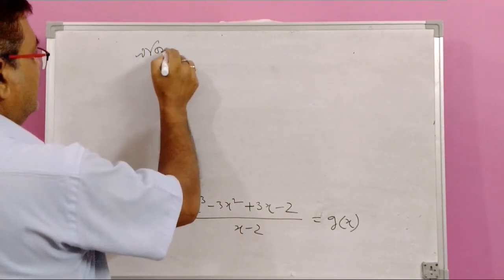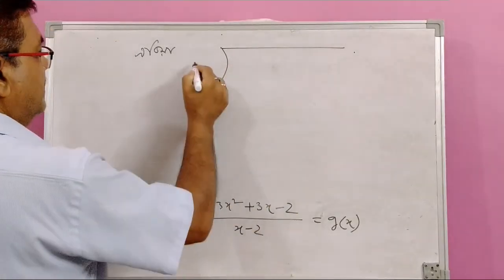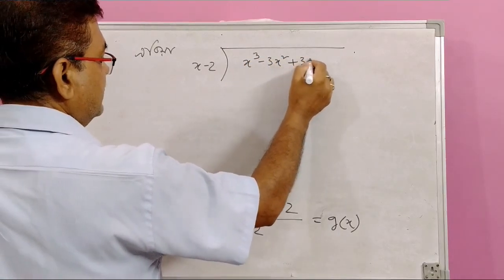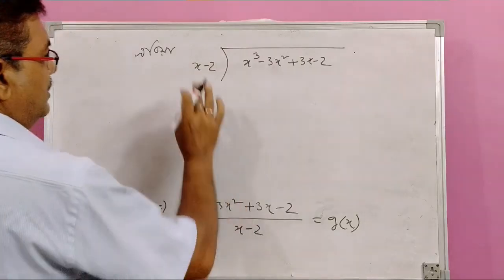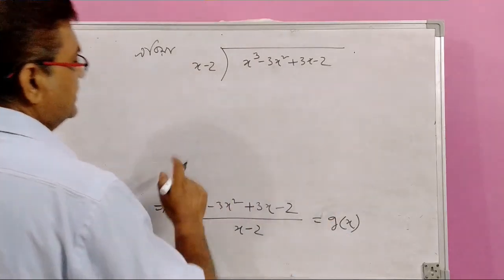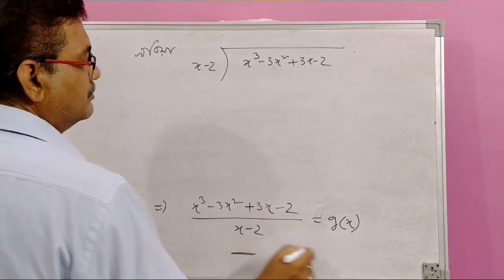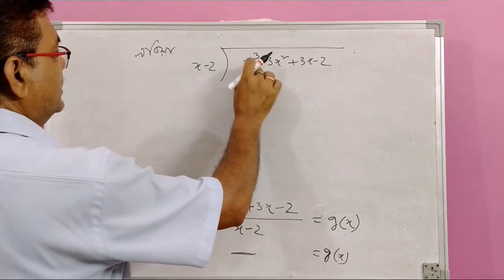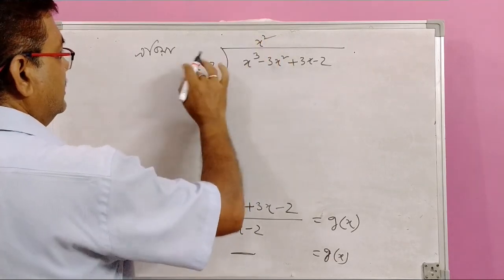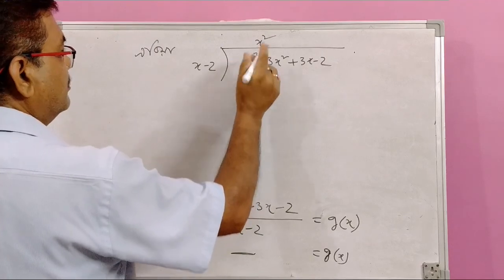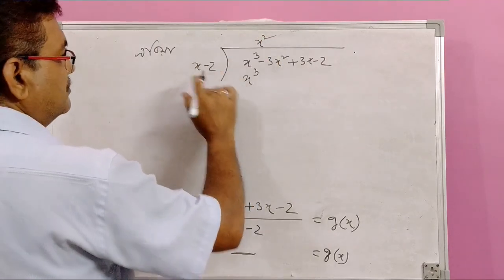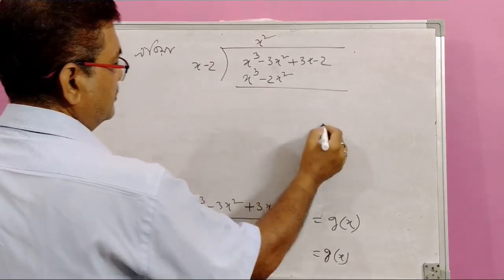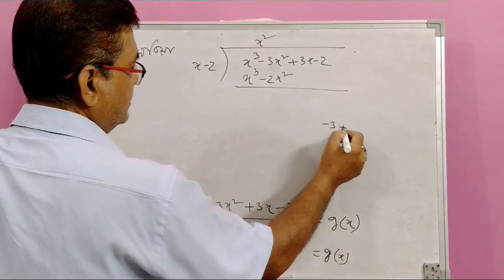Let us put this: x minus 2, tx squared plus tx minus 2, it means ti and artdh. This is plus x squared, minus 2x squared, 1 plus x squared.